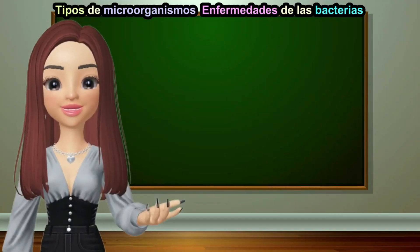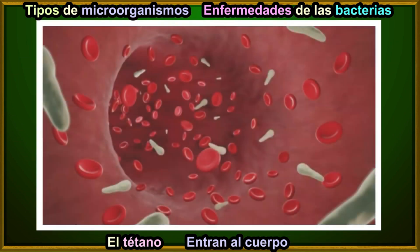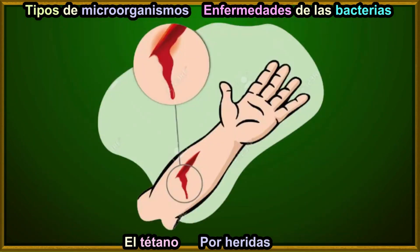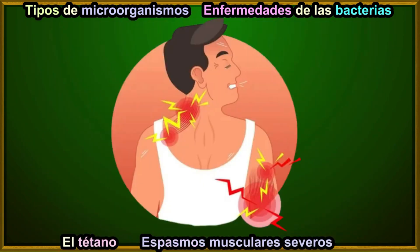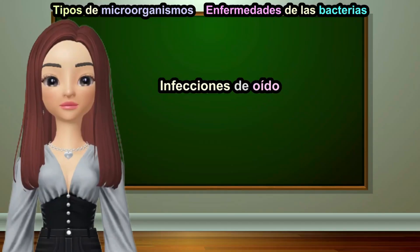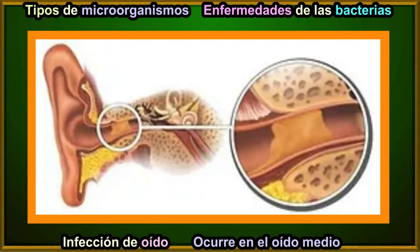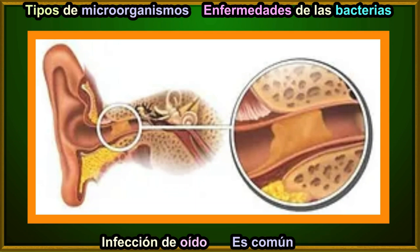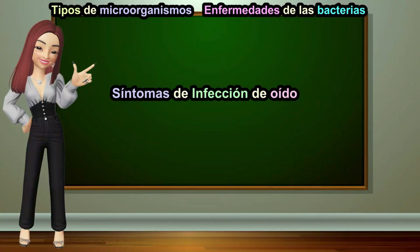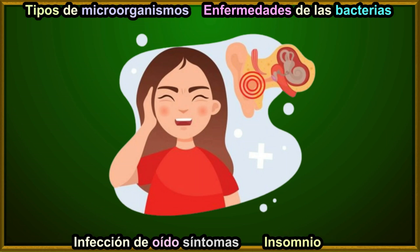Another bacterial disease is tetanus. Tetanus is caused by bacteria that can enter the body through wounds. It causes severe muscle spasms and can be fatal if not treated in time. Ear infections are also caused by bacteria. They can occur in the middle ear and are common in children. Symptoms include ear pain, high fever, and difficulties with sleeping.